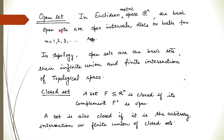In topology, open sets are the basic sets — they are the members of the topological space. Infinite unions, finite intersections, the whole set, and the empty set are all open sets. A set is said to be closed if its complement is open, meaning if the complement is a member of the topology. Clearly, the whole set and the empty set are both closed. Alternatively, a set is closed if it is an arbitrary intersection or finite union of closed sets.